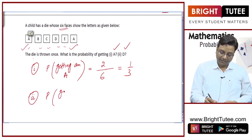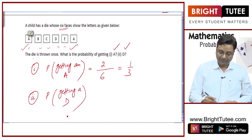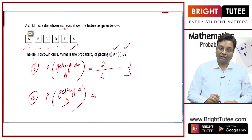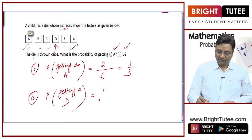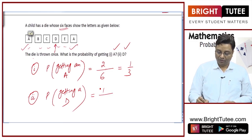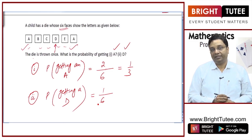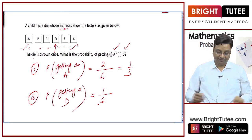Probability of getting a D. In this circumstance, what are the number of favorable cases? Only one case is favorable. So 1 by 6 is the probability of getting a D.